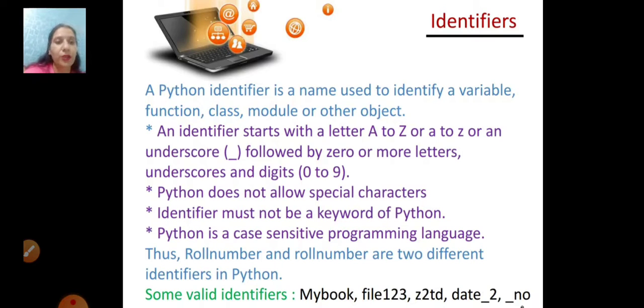Thus, rollnumber and ROLLNUMBER are two different identifiers in Python. Some valid identifier examples are mybook, date_2, _no, file123, etc.